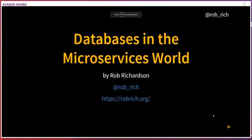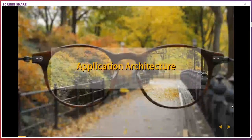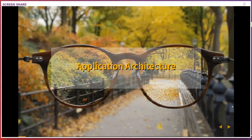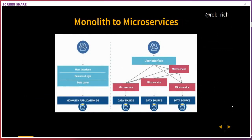Databases in the microservices world. Let's look at application architecture and move from applications into databases. We took this path from spaghetti through lasagna — we started building interior architectures separating the various tiers much like lasagna. Then we moved into ravioli, where we have lots of little pieces — lots of little microservices. This is how we got in our applications from a monolith to microservices. In the monolith experience, deployment was really hard; we wanted to do it as infrequently as possible.